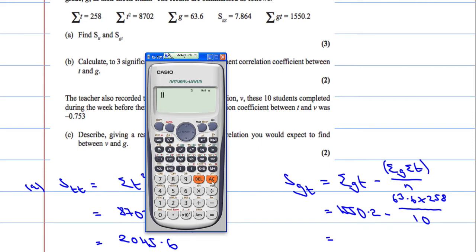So 1550.2 minus 63.6 times 258 over 10. And then that's going to give us negative 90.68.